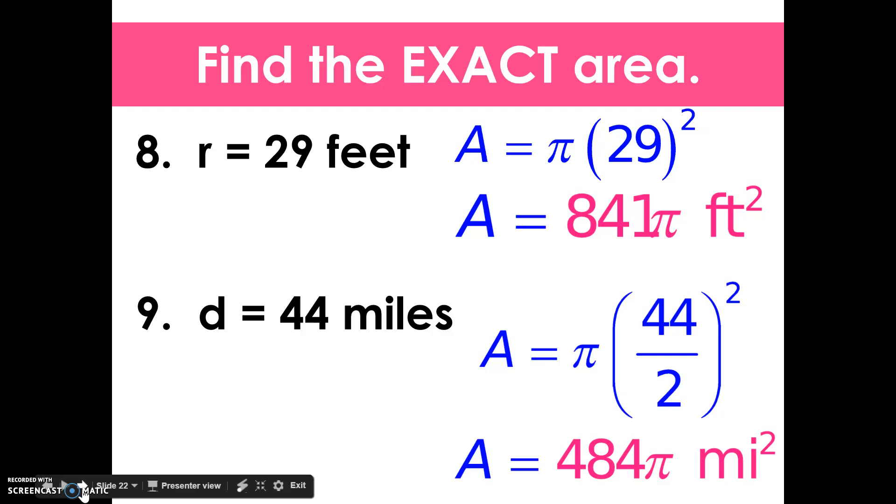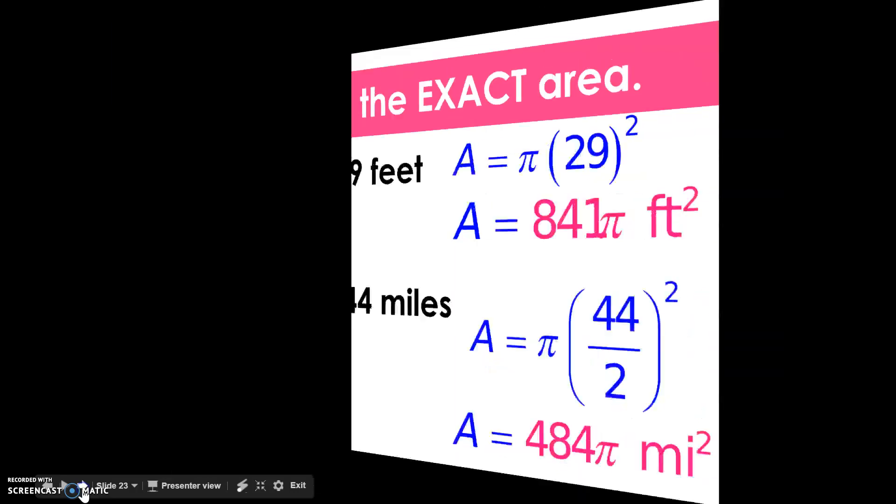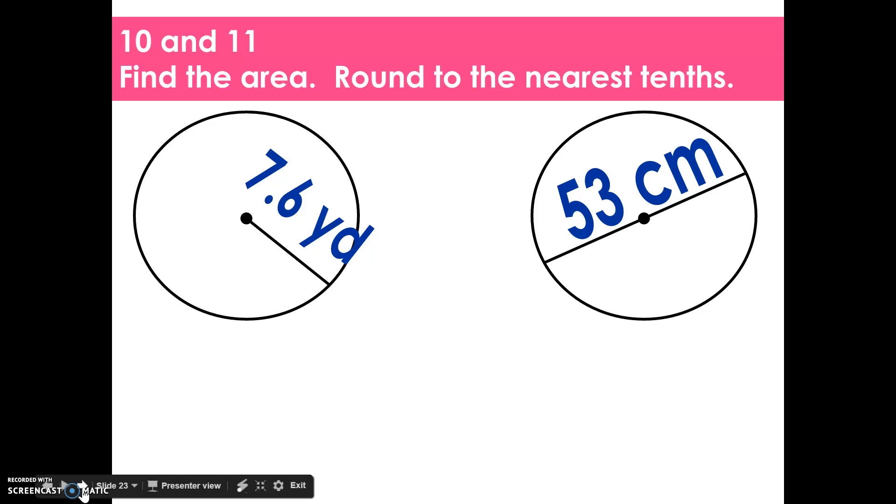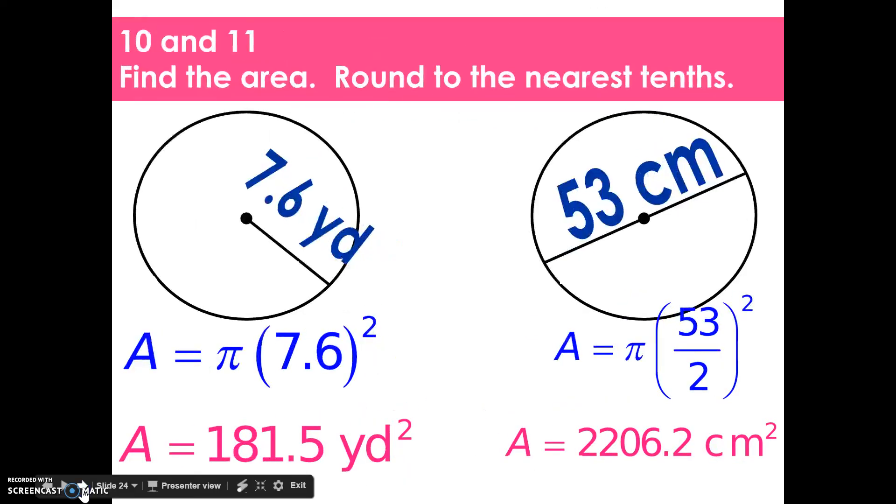841 pi feet squared and 484 pi miles squared. Alright, so find the area here and this time you're going to round to the nearest tenths. Alright, hopefully you've had a chance to do that. Here are the answers. Again, rounding to the nearest tenths. So we're putting pi into the calculator. Alright.